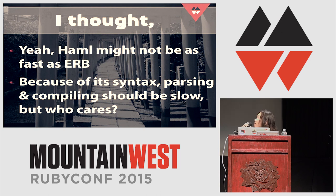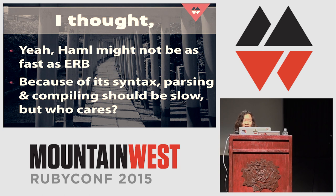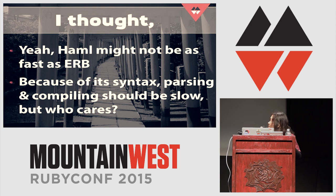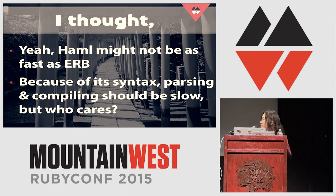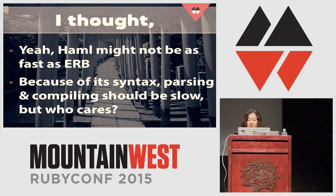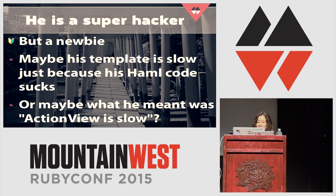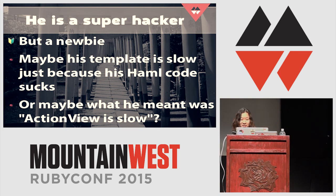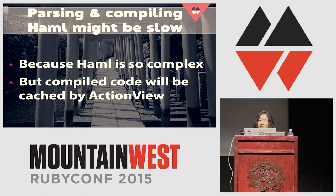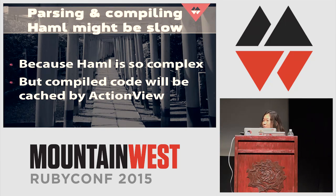I thought Haml might be a little bit slow because parsing Haml is slow — the syntax is complex. But I thought, yes, I know he's a superstar, but he's a newbie on Rails, so maybe he's wrong. Maybe his Haml code has some problem. Parsing and compiling Haml is a little bit slow, but that doesn't really matter because ActionView caches the compiled Ruby code. The second request is returned from the compiled Ruby code, so the compilation runs just once, basically.